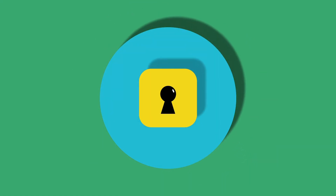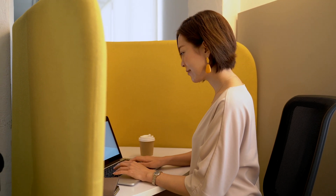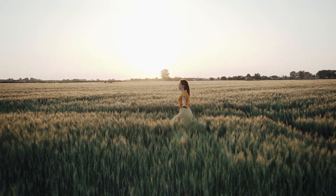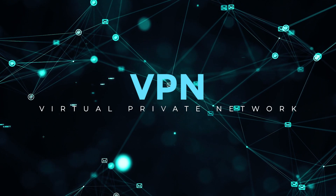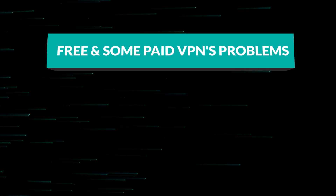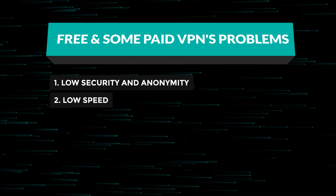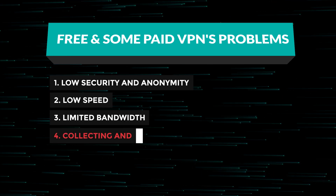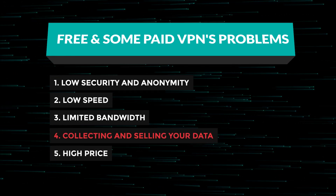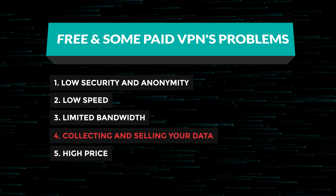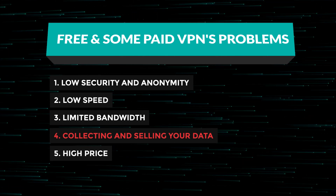One effective way to ensure security and anonymity on the Internet, including bypassing censorship, is to use a virtual private network. Most users opt for ready-made services — either free but unreliable services with built-in advertisements and tracking, or paid but costly services. Furthermore, both free and paid services often monetize by selling your data to third parties such as marketing companies and others.